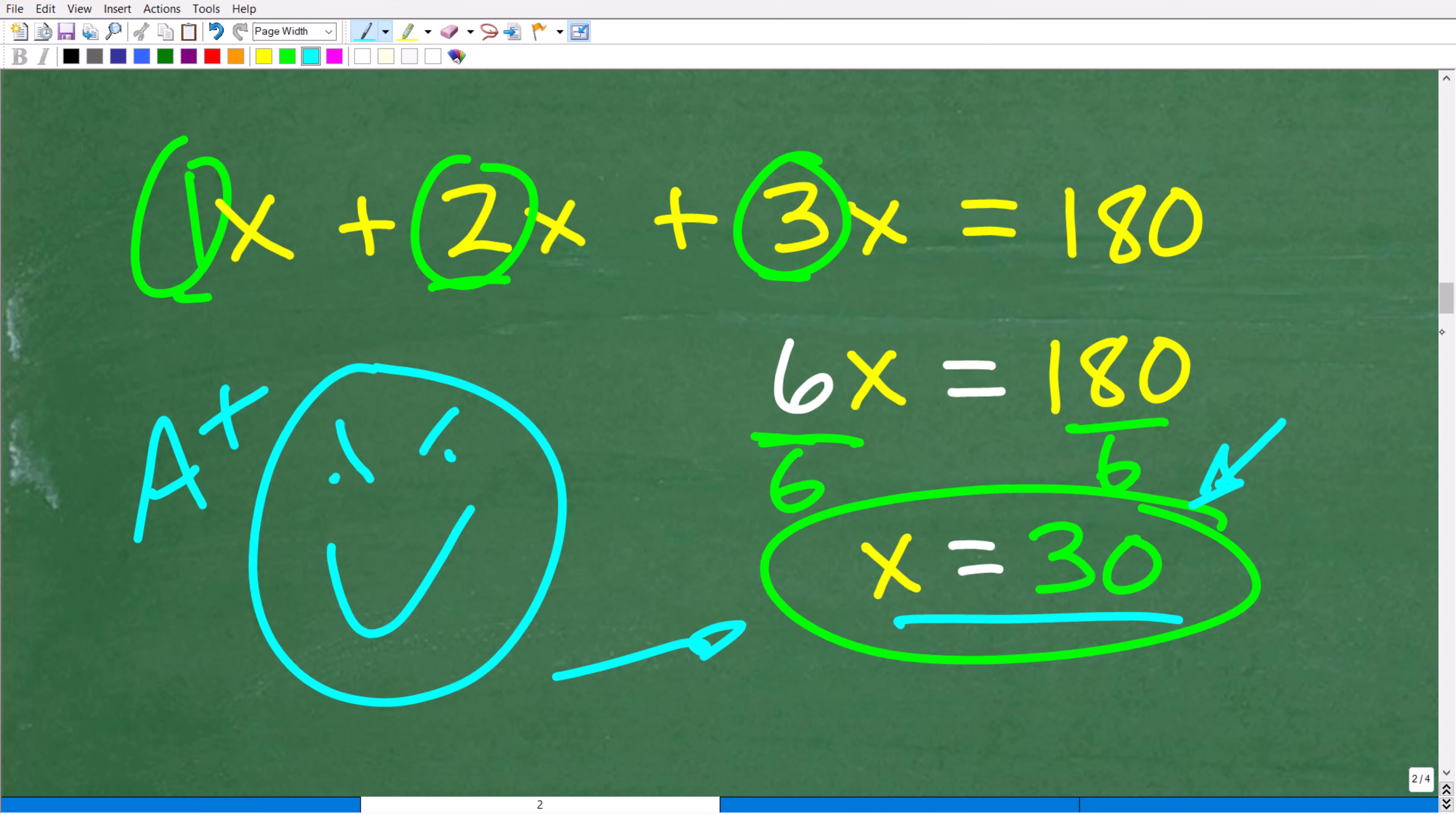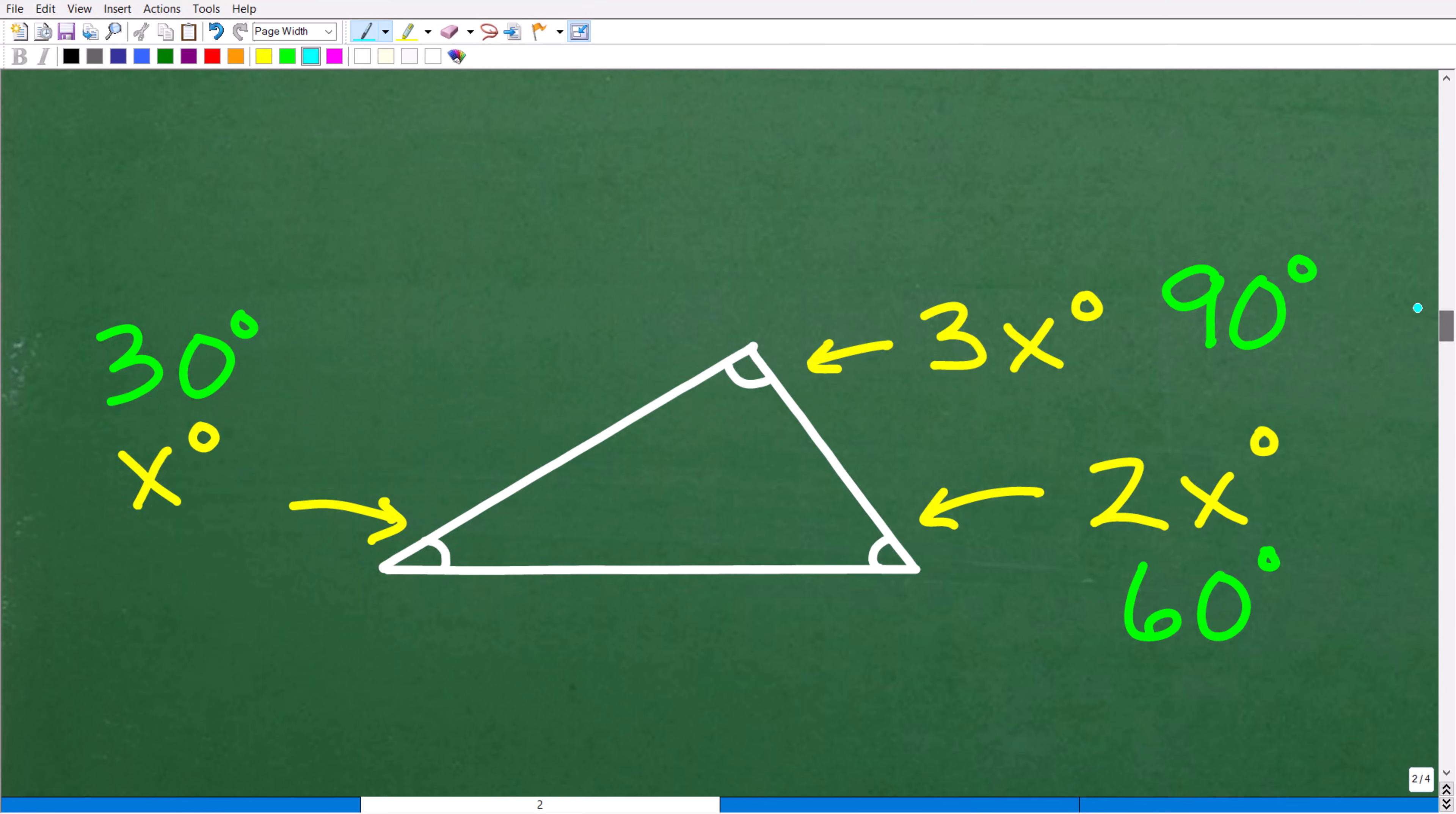So what does this mean? Well, we have x is equal to 30, but we have to go back to our diagram here. So x is equal to 30, and that basically means that this angle here is 30 degrees, but we need the other angles. So we're going to have to go back, and now that we know that x is equal to 30 degrees, we can simply plug this in right here.